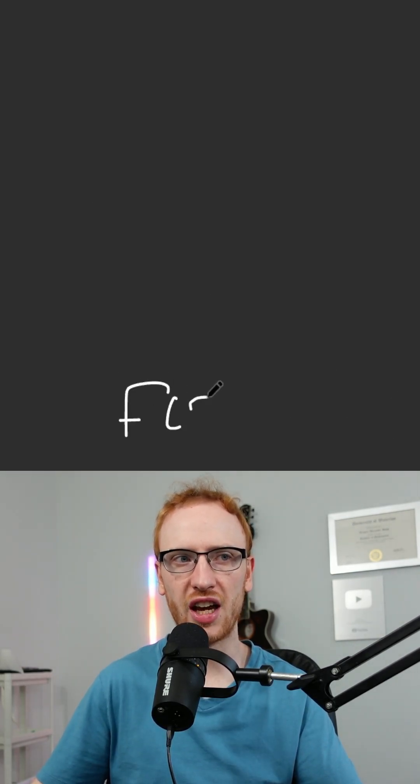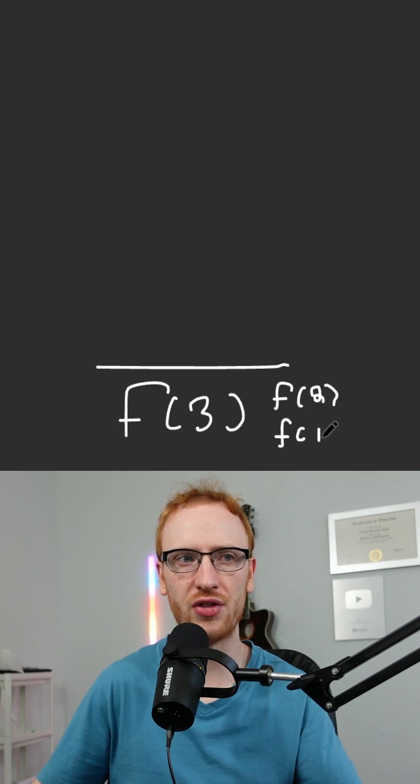So if we needed something like F at 3, well this is going to build what's called a recursive call stack. F at 3 needs the values of F at 2 and F at 1.